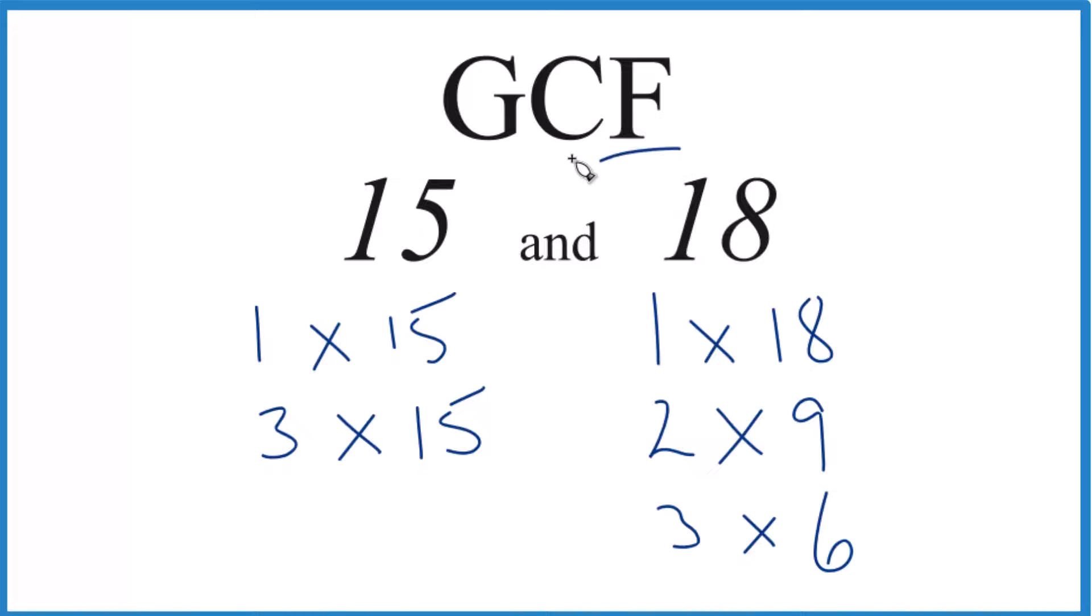So now we have all the factors, we can look at the ones in common. Well, 1 goes into 15 evenly, and it goes into 18 evenly. So that's a factor. And then we have 3, that goes into 15 and 18. But those are the only common factors for 15 and 18.